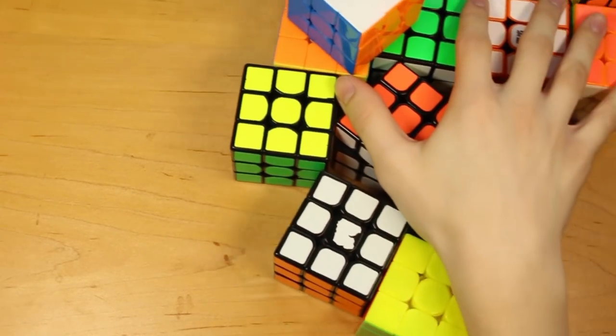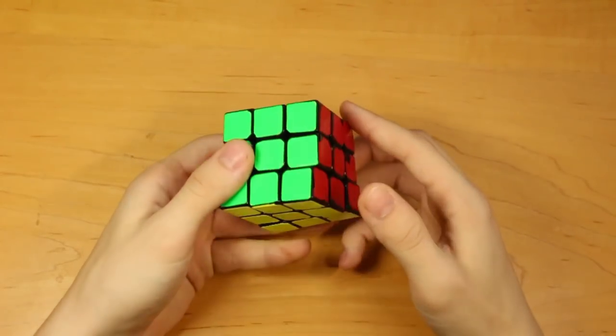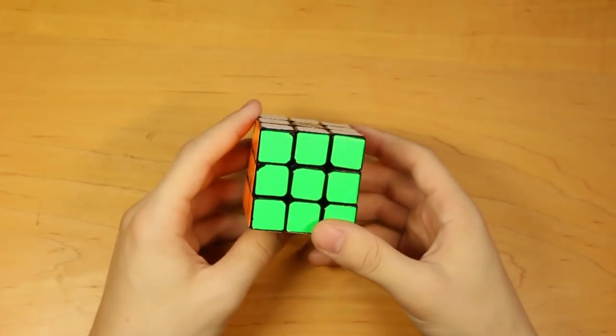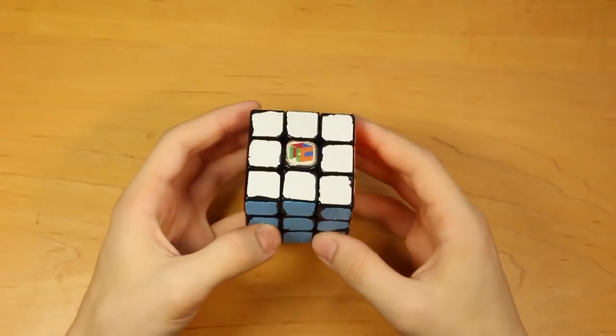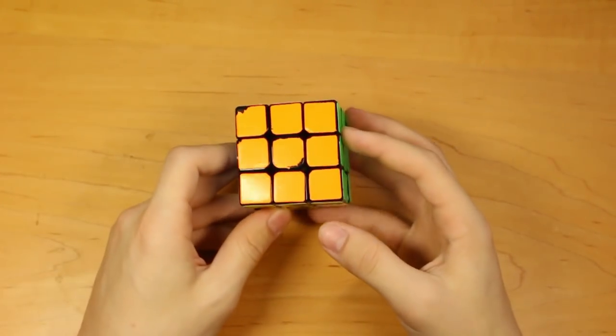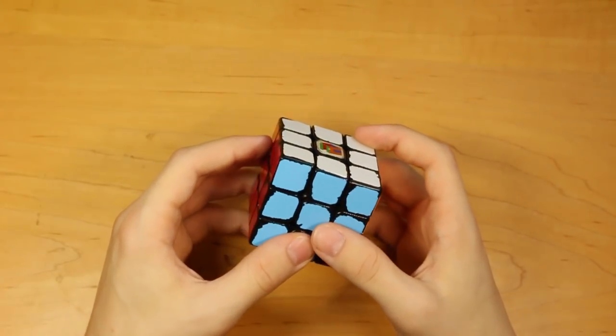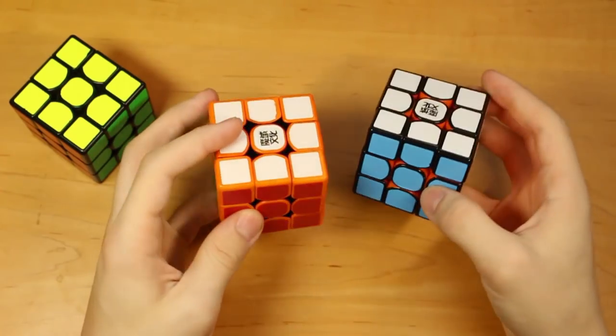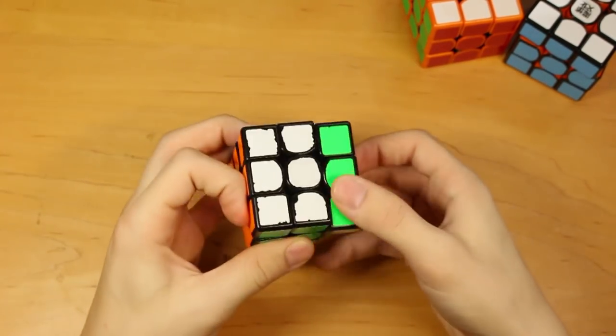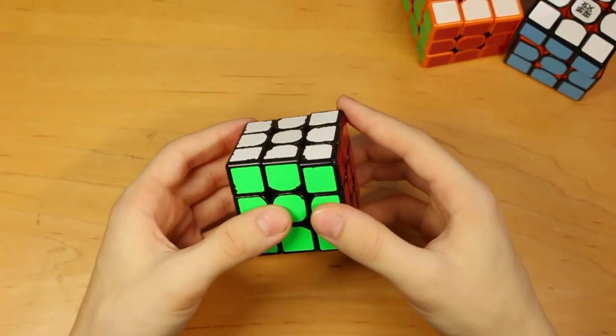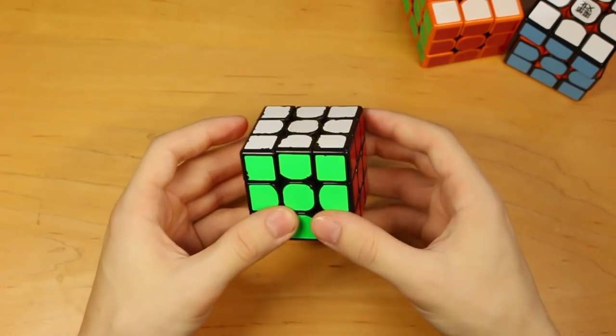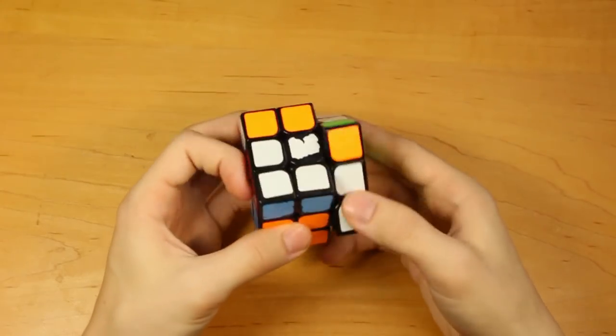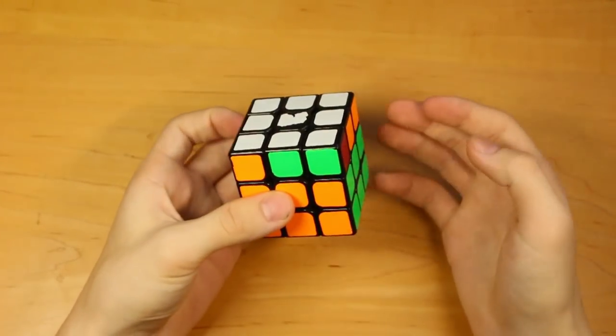And now for all of my Moyu cubes. So this is a Moyu Aolong V1 Mini. That is the only Aolong V1 I have. And it doesn't turn great, but it was my OH main for a while. And it has a good amount of sentimental value to me. Here are my GTS1s. Two are dyed in Halloween theme colors. And this is my first ever magnetic cube. It is a GTS1 and used to be my feet main. But now it is my nothing main because feet doesn't exist. This is my Moyu Aolong V2, which I bought from Roy Lee. And I broke a lot of PBs on this cube.